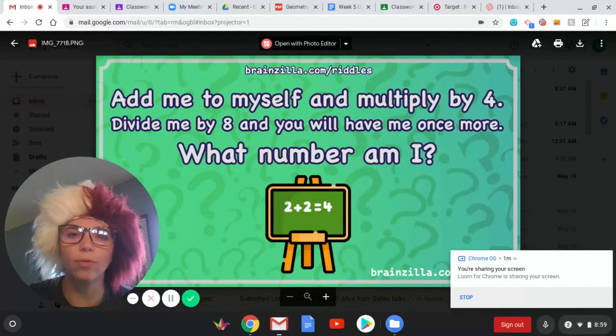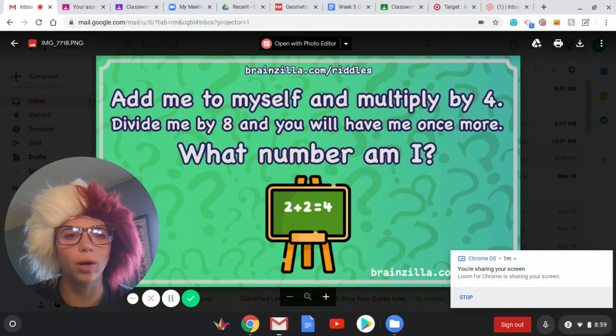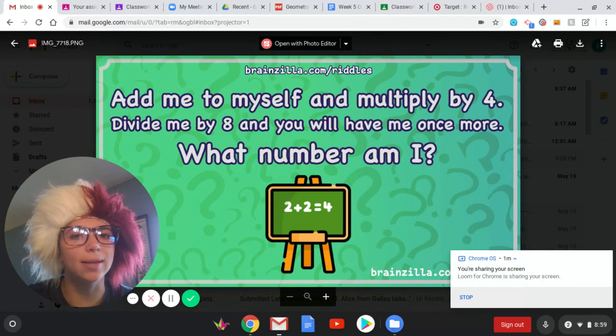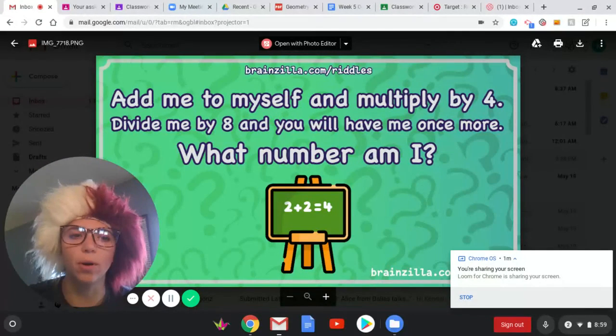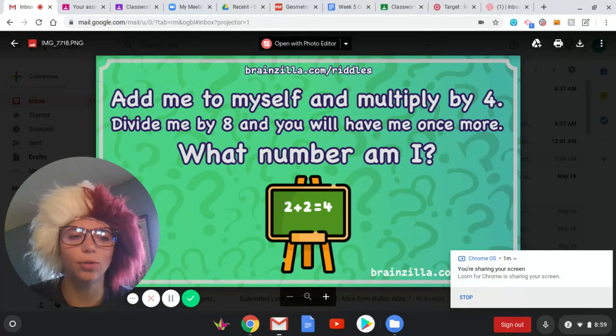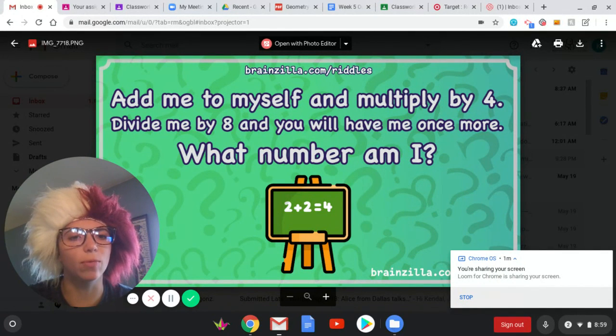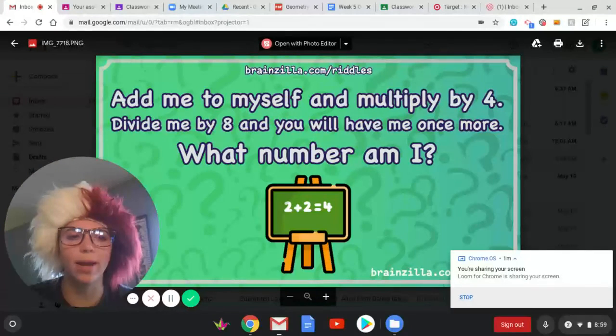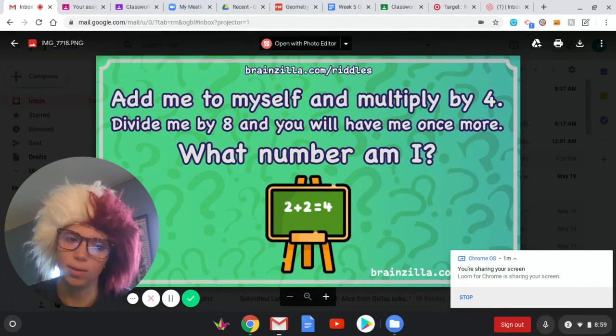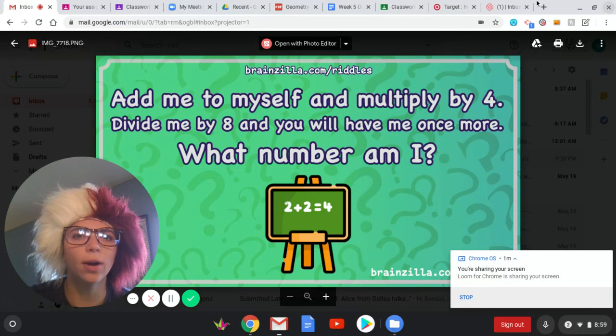Add me to myself and multiply by four. Divide me by eight and you will have me once more. What number am I? I'll read it one more time. You can think about that throughout the lesson, and at the end, I will reveal the answer. Add me to myself and multiply by four. Divide me by eight and you will have me once more. What number am I? Maybe you can test out some numbers and see if you can solve it.